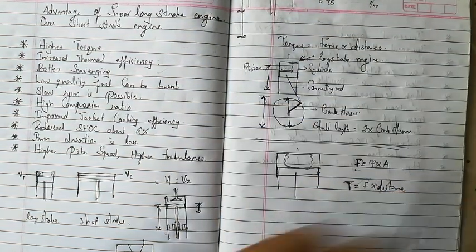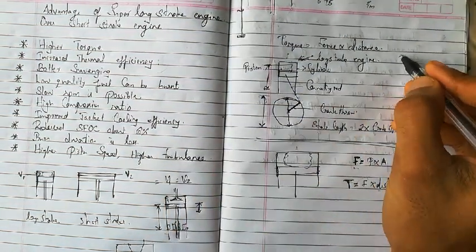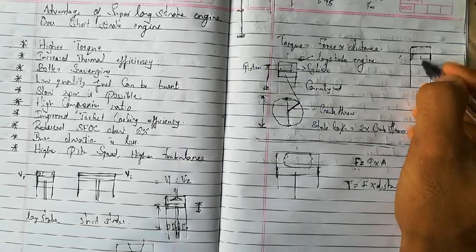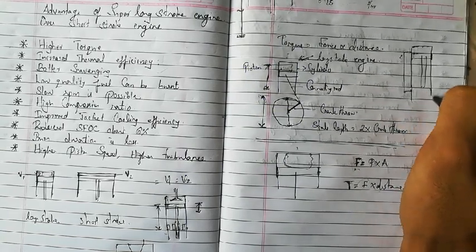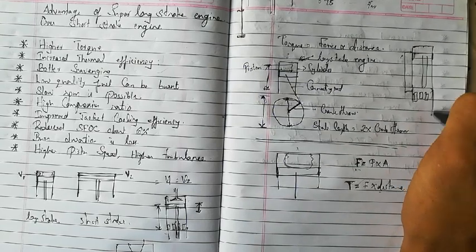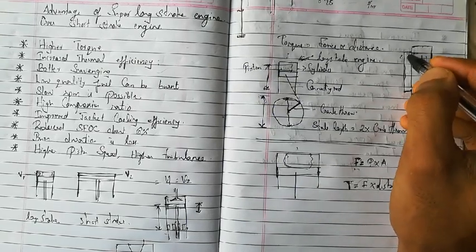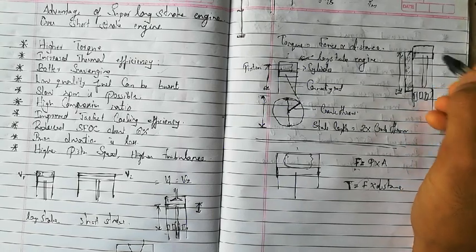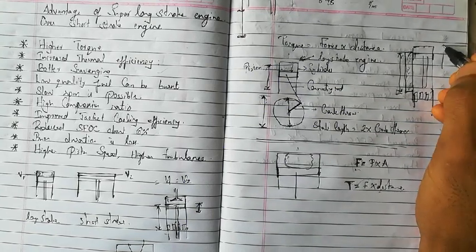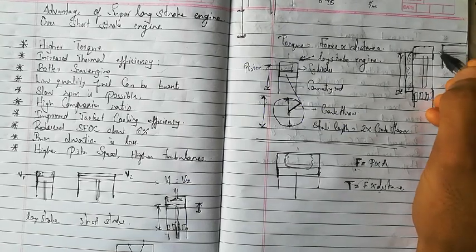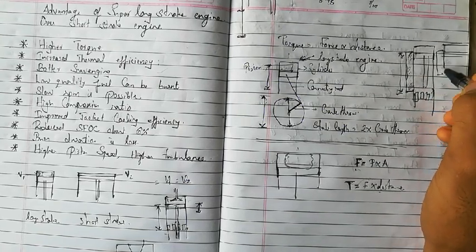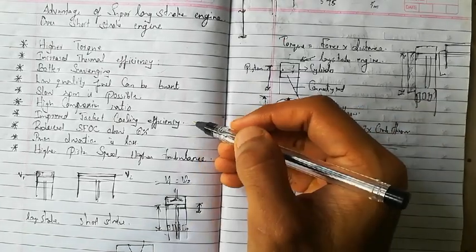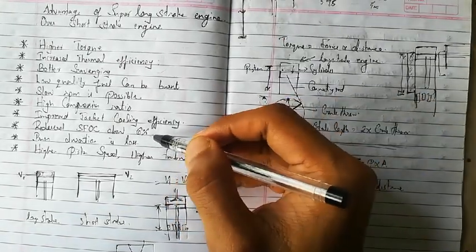Another advantage is improved jacket cooling efficiency. In a long stroke engine, the cylinder has more surface area available along its length, allowing more water jacket area for cooling. In a short stroke engine, less surface area is available because the stroke length is short. More surface area means more heat transfer, which is why jacket cooling efficiency is improved in long stroke engines.